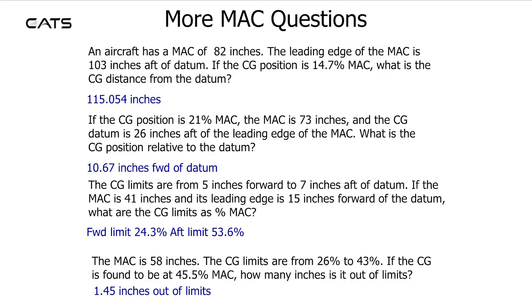Some more MAC questions. An aircraft has a MAC of 82 inches. The leading edge of the MAC is 103 inches aft of the datum. If the CG position is 14.7% MAC, what is the CG distance from the datum? The answer is 115.054 inches.